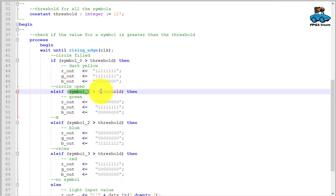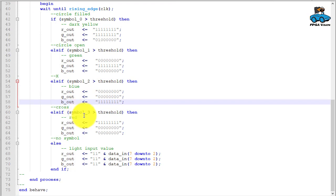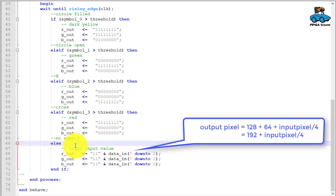Else we check if symbol 1 is larger than the threshold. If yes, this is the open circle. And we get a green output value. Else this corresponds to x and this is set to blue. This would be the cross. And this is indicated by a red output pixel. If none of these symbols are detected, we give the input value to the output. And for better visibility, we brighten up the input pixel. We use an offset of 192 and add the input pixel divided by 4. And this is our output value.